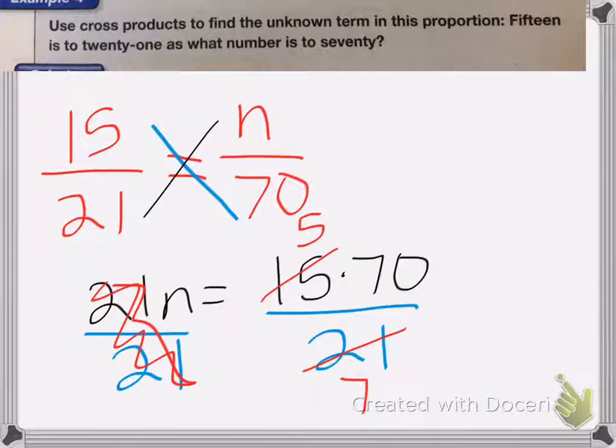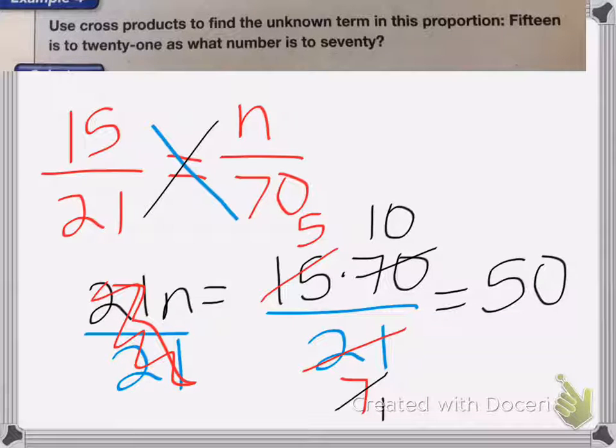Now I can still cancel again. I can cancel the 7 and the 70. My 7 becomes a 1 and the 70 becomes a 10. So I'm left with 5 times 10, which is equal to 50. So n equals 50.